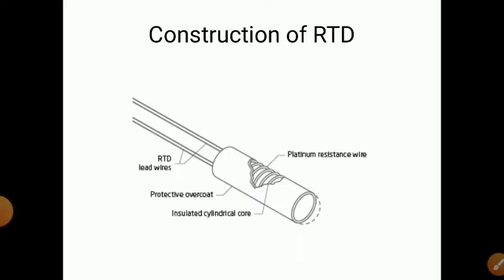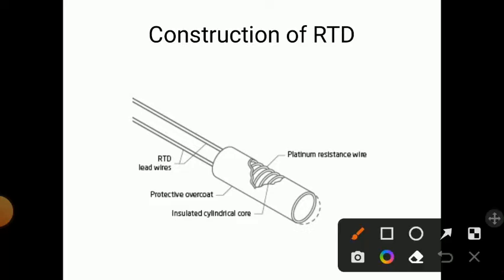Now, what is RTD? The full form of RTD is Resistance Temperature Detector. RTD consists of a platinum resistance wire coated with a protective covering and kept in an insulated cylindrical core. Only two wires are taken out — called RTD lead wires — for measuring the resistance.